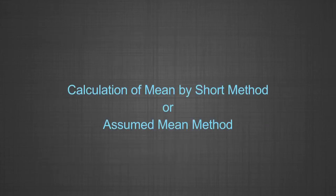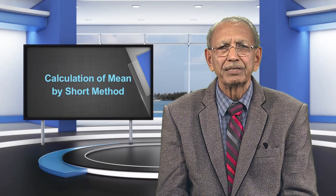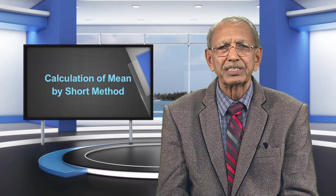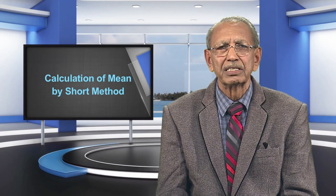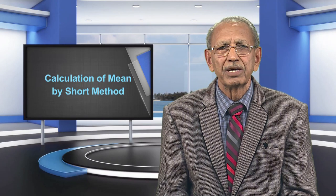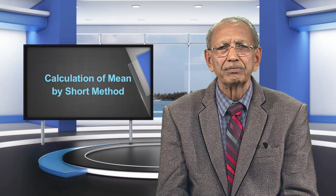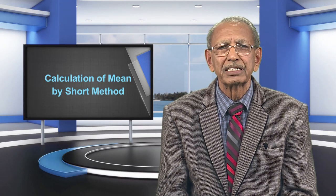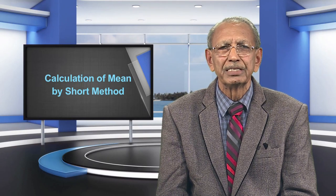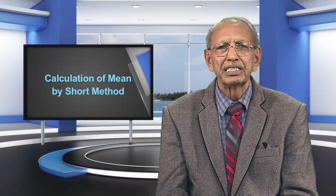We are now going to show the calculation of mean by the short method or assumed mean method. The long method of calculating mean is accurate and straightforward, however it very often involves handling large numbers and requires tedious calculations. Hence, to overcome these difficulties, the assumed mean method has been devised for the computation of mean from frequency distributions. The same is illustrated in Table 3.